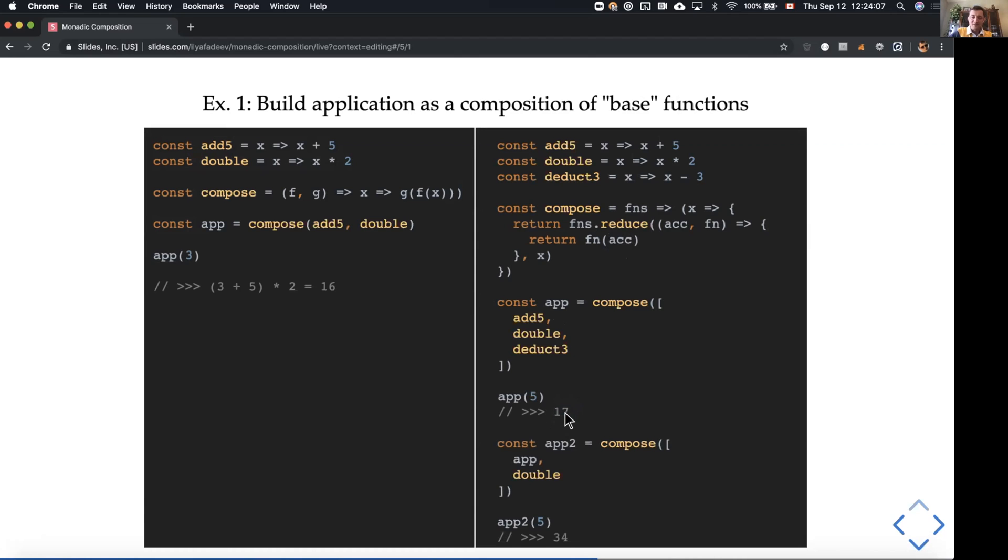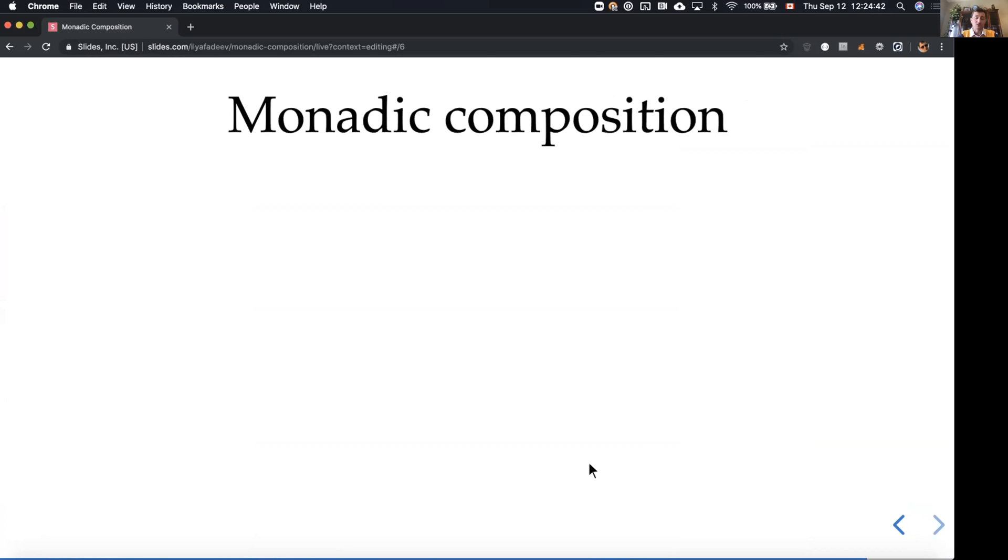And when we call it, it basically gives us some result. The fun part here is that I can define my application, but what if I want to write another application that does exactly the same as my previous one plus something else? With the same implementation of the compose helper, I can do the following. I can just compose my previous application with the next set of functions that I want my application to perform, and this will work. So this was a pure, what's called mathematical function composition. Let's look at actually what monadic composition is.